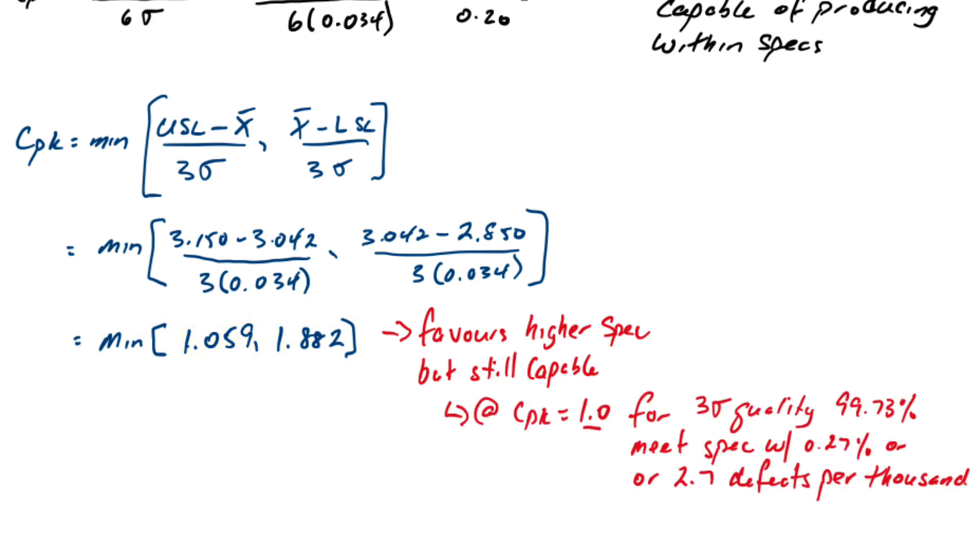If you want to compare that to a CPK of 1.0 for three sigma quality that would mean that 99.73 percent of the output meets specifications. So that means that 0.27 percent or roughly 2.7 defects per thousand is what we're dealing with here which is still pretty low and very capable.